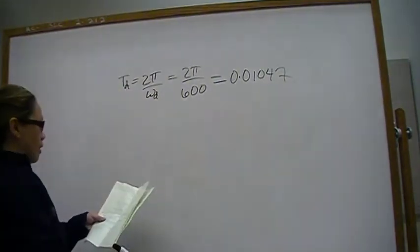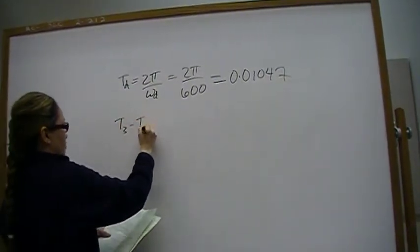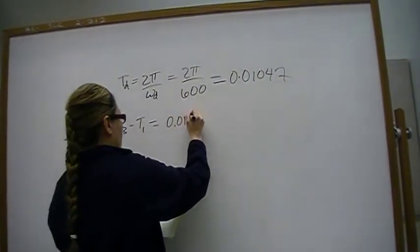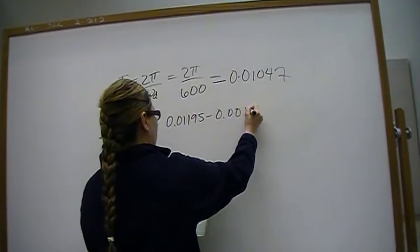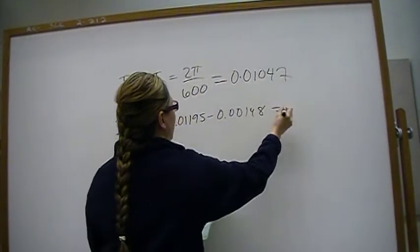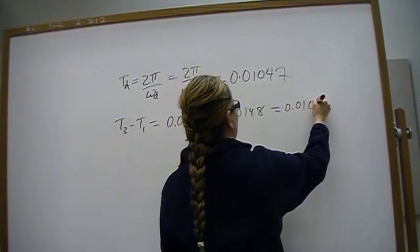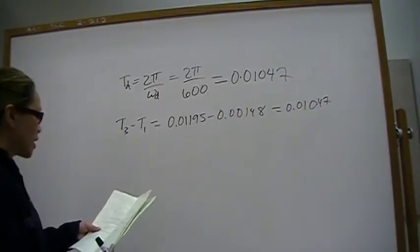If you do the math on that, t3 minus t1 would be 0.01195 minus 0.00148. And that works out to be 0.010407. So that's part c.